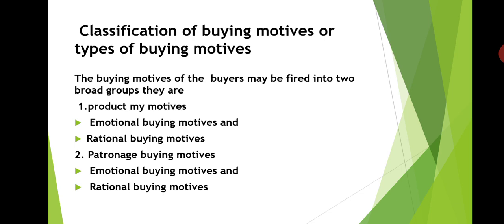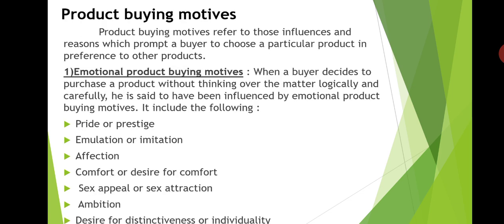Classification of buying motives or types of buying motives: buying motives of a consumer or buyer may be classified into two broad groups — product buying motive and patronage buying motive. Product buying motives can be again sub-divided into emotional product buying motive and rational product buying motive. Similarly, patronage buying motives are also subdivided into emotional patronage buying motive and rational patronage buying motive.